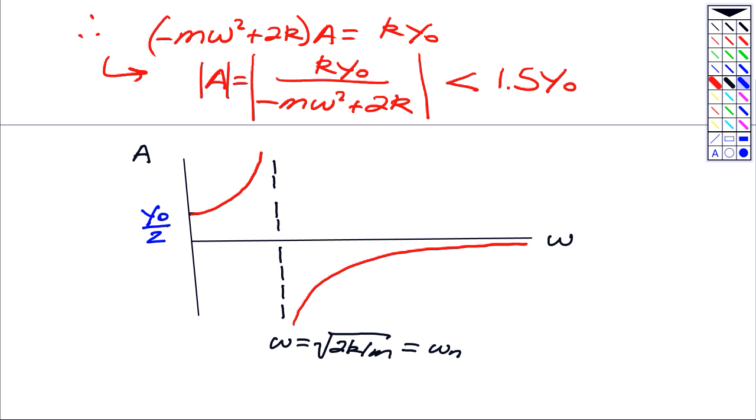So what we want to do is make sure that the amplitude stays below 1.5 Y naught. So this is going to be one value of omega. Let me call that omega 1. But keep in mind that A also takes on a negative sign. So down here, as long as we stay to the right of omega 2, we are guaranteed that the amplitude and magnitude is less than 1.5 Y naught.